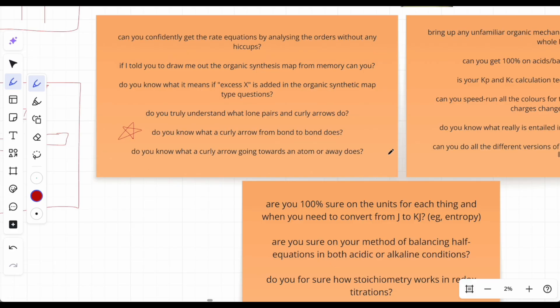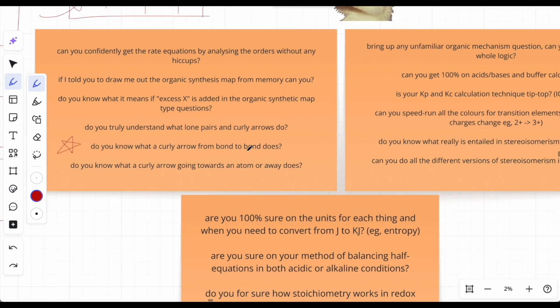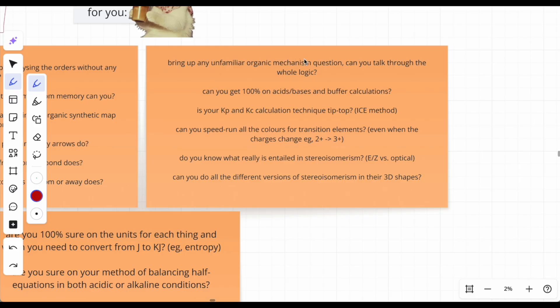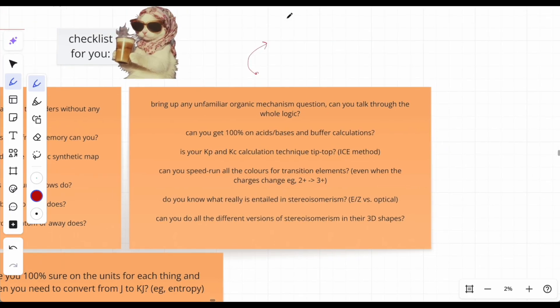I learned this from the chemistry olympiad, but it turns out questions on ozone lysis do lots of bond to bond curly arrow stuff, so you need to know what that means. It's very different from going from the middle of a bond to an atom. Do you know what a curly arrow going towards an atom does? Bring up any unfamiliar organic mechanism question and can you talk through the whole logic - why have they moved the curly arrow from this position to that, why are lone pairs there, why are they going somewhere else?